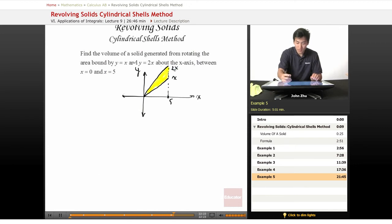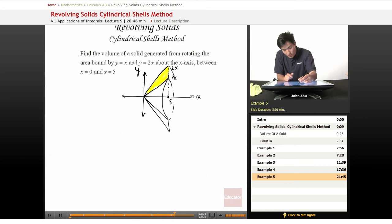So it's going to be this region, x equals 2x, and it's going to be this region rotated about the x-axis. So it's going to look something like this. So it looks kind of like a hollowed out cone.